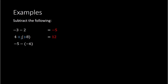Next, we have negative 5 minus negative 6. Minus a negative makes a positive, so this becomes negative 5 plus 6. We are adding two numbers with different signs — one is negative, one is positive. So we subtract the two numbers: 6 minus 5 is 1. Then we keep the sign of the bigger number, which was 6, and it's positive. So my final answer is positive 1.